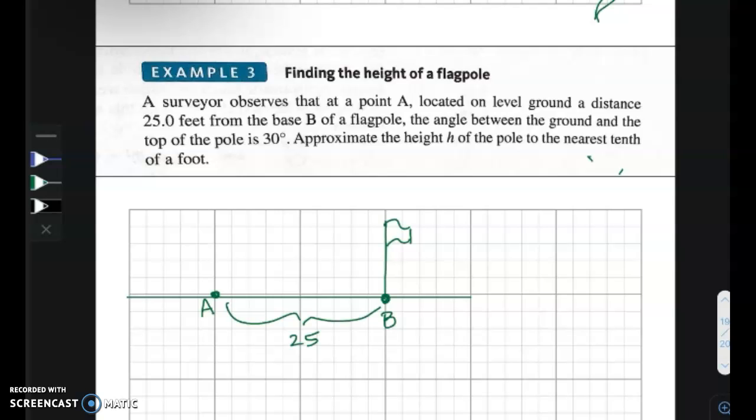The angle between the ground and the top of the pole, and this is from his observation. So from him to the top of the pole, this angle, which I'm going to call theta, is 30 degrees.